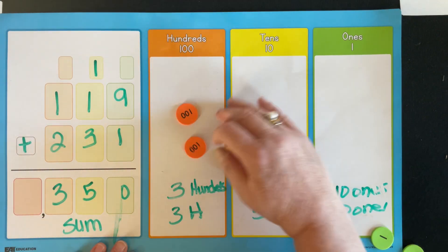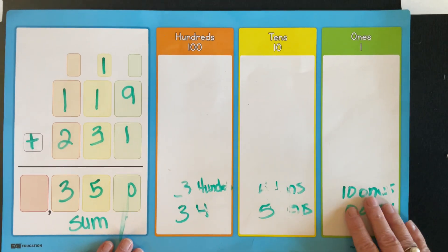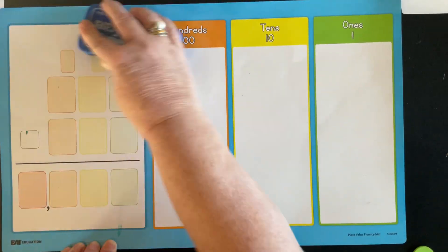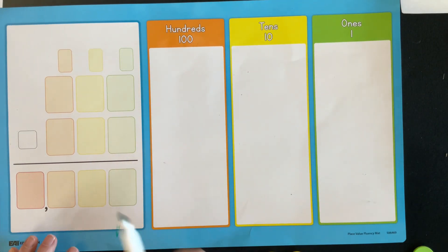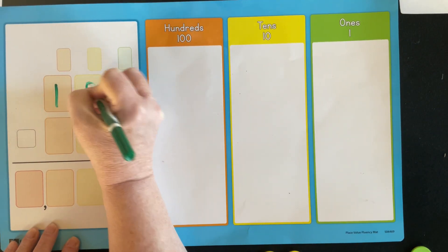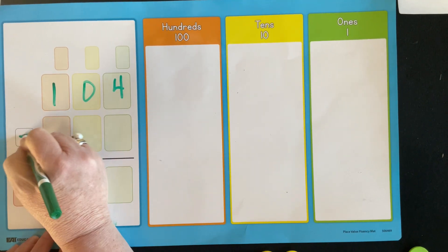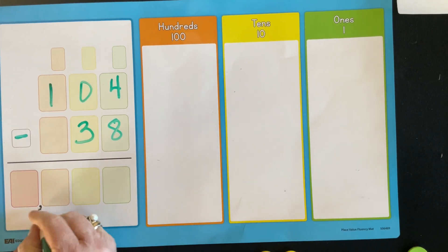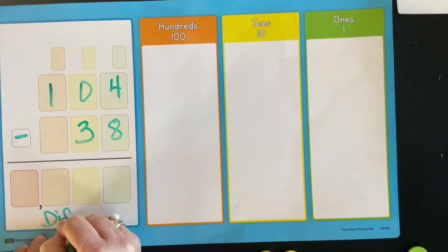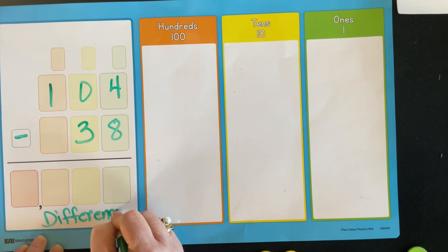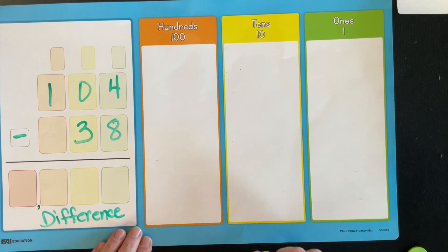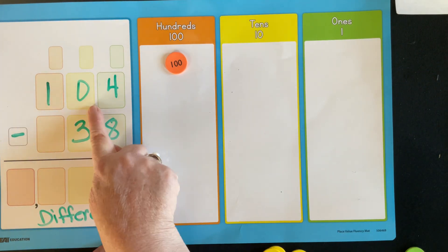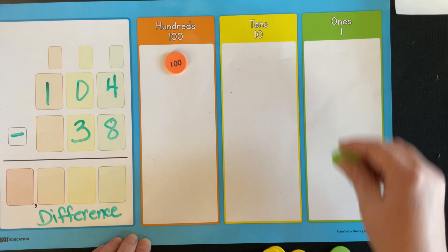Now let's work one subtraction just to show you how that works and how the regrouping versus the trading goes. And again, I'm going to use the mat over here because I think it's a really good way to look at traditional. So we're going to start off with the number 104. This time we're going to take away 38. So what will my answer be called? Difference. So I'm finding the difference between 104 and 38. So let's represent 104. So that would be one 100, no tens, and four ones.